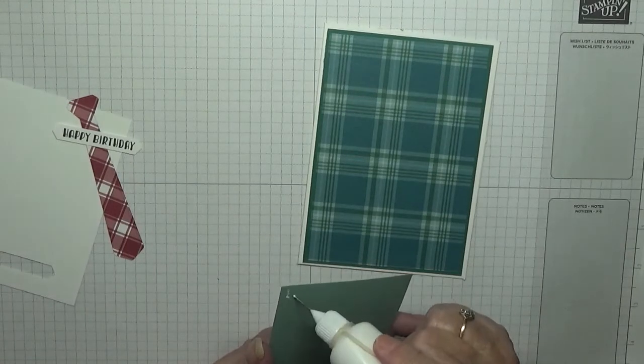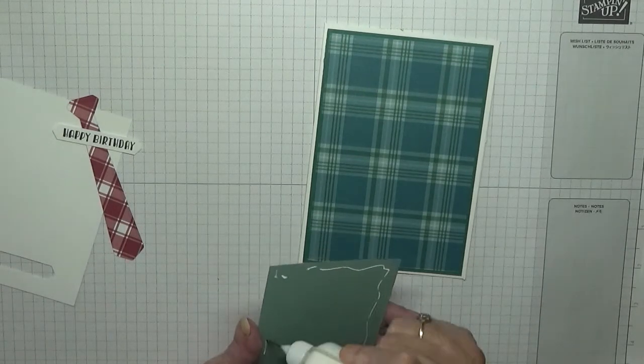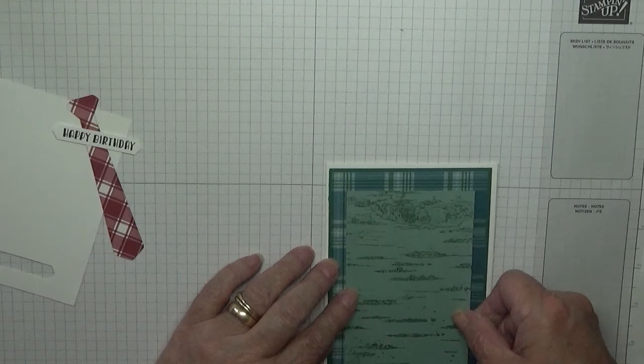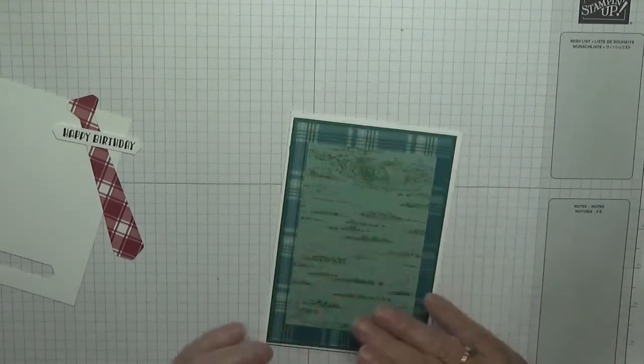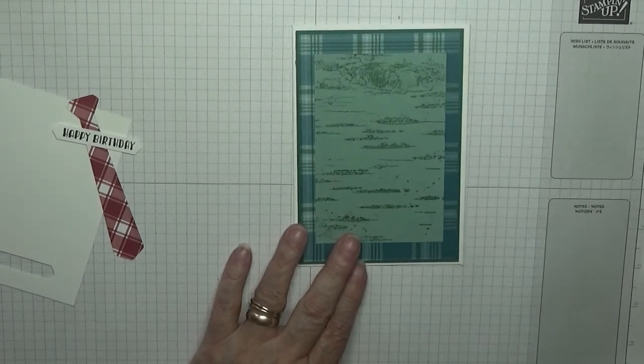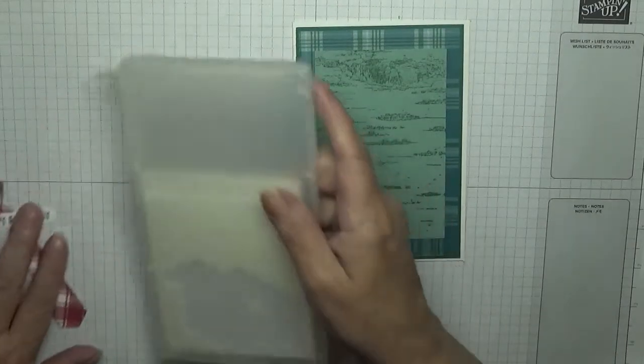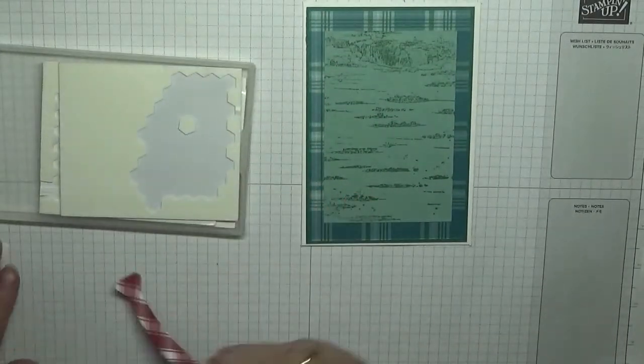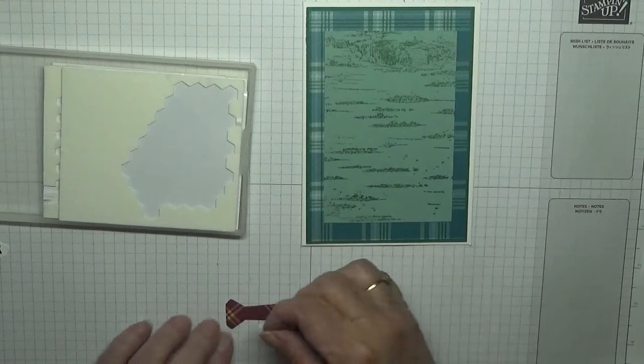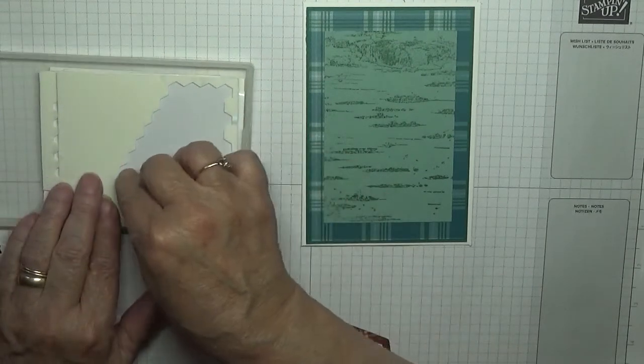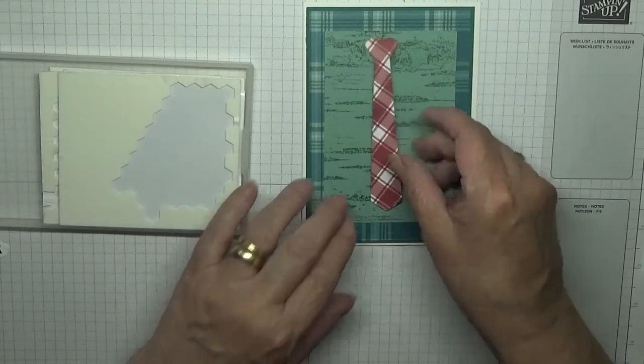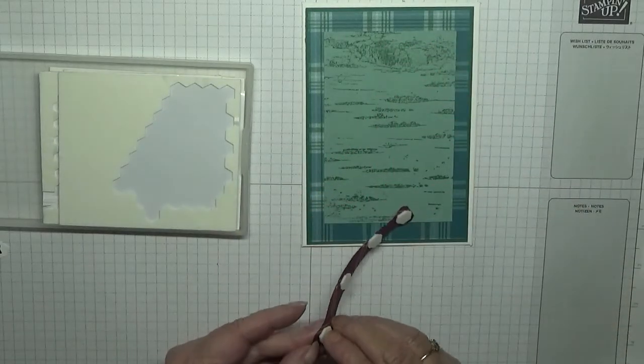And then we're going to just stick this down flat like so. And the tie and sentiment will go on dimensionals - I forgot what they were called then. That will go on there like that.